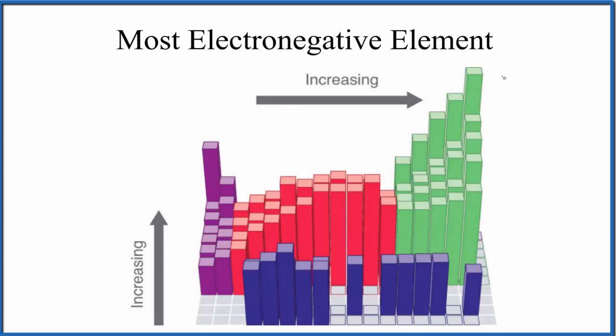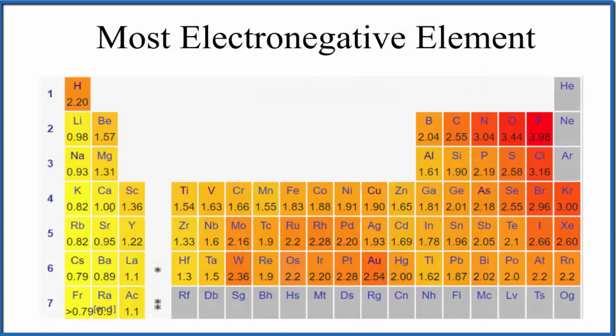Let's figure out what this element is. Again, as you go across periods and up groups, electronegativity increases. So the most electronegative element is fluorine.